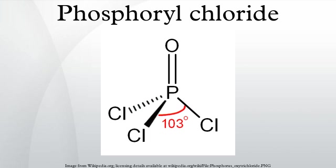Another common laboratory use for POCl3 is in the Vilsmeier–Haack reaction, where it reacts with amides to produce a Vilsmeier reagent, a chloroiminium salt, which subsequently reacts with electron-rich aromatic compounds to produce aromatic aldehydes upon aqueous workup.